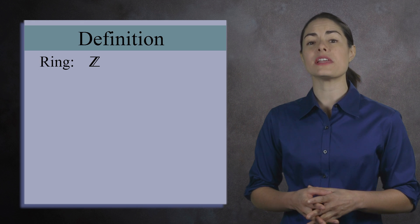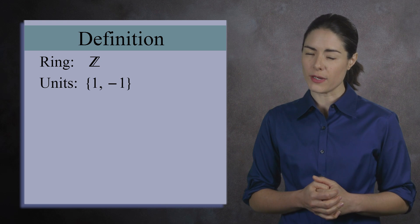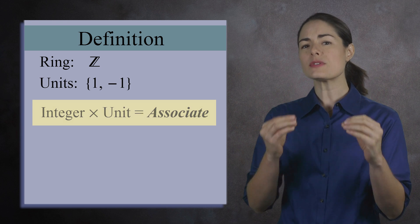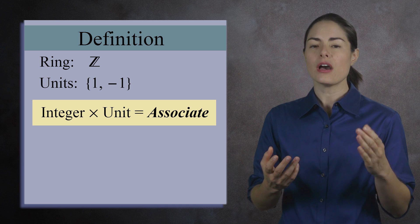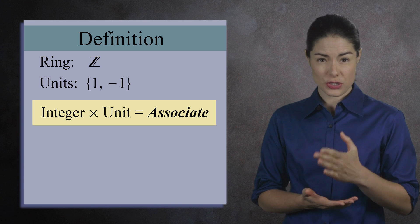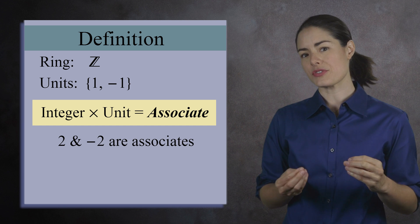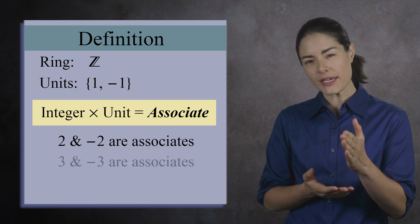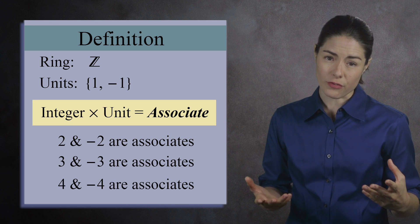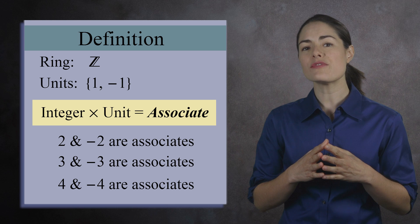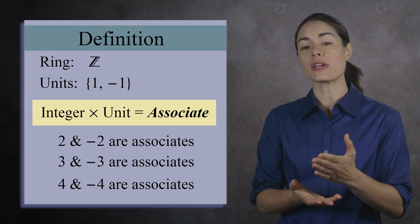Let's return to the example of the integers Z. This ring has two units, 1 and negative 1. If you multiply any integer by a unit, you get what's called an associate. For example, if you multiply the integer 2 by the units, you get 2 and negative 2 — these integers are associates. Similarly, 3 and negative 3 are associates, as are 4 and negative 4, and so on. The ideas of units and associates are needed for a more precise discussion of factoring numbers.